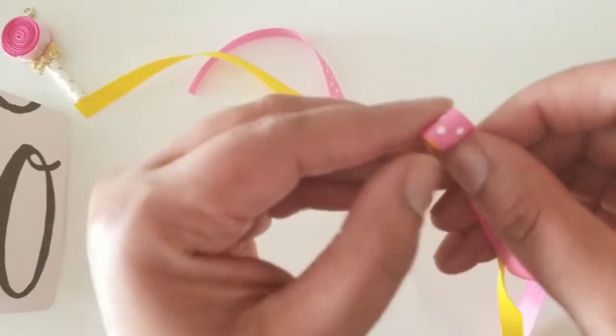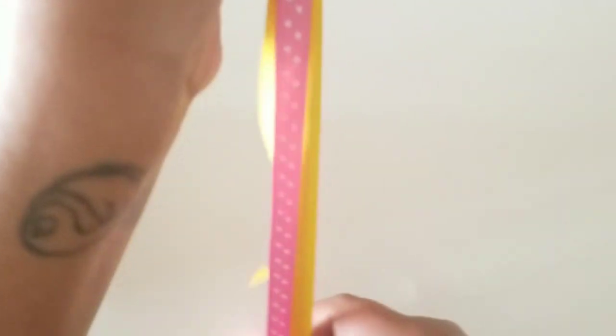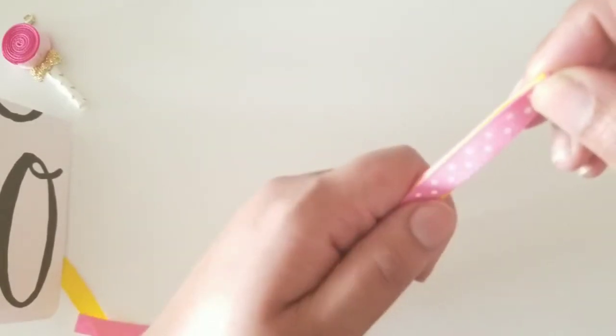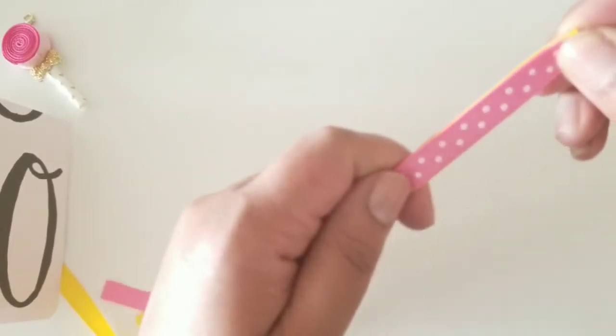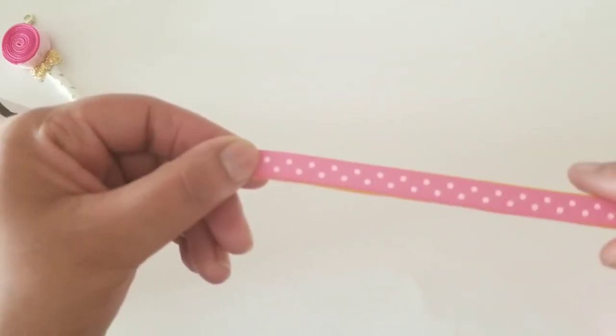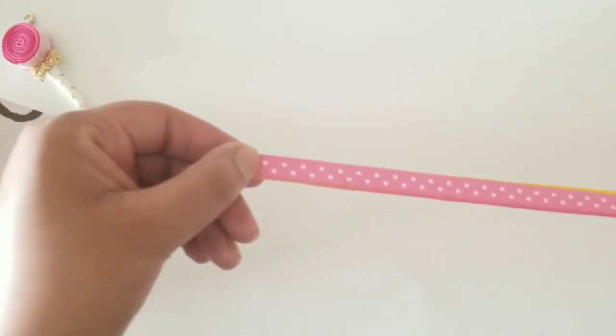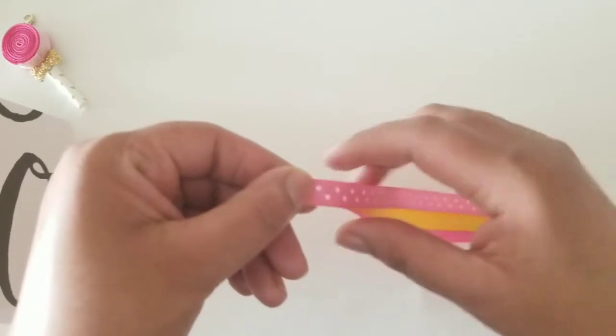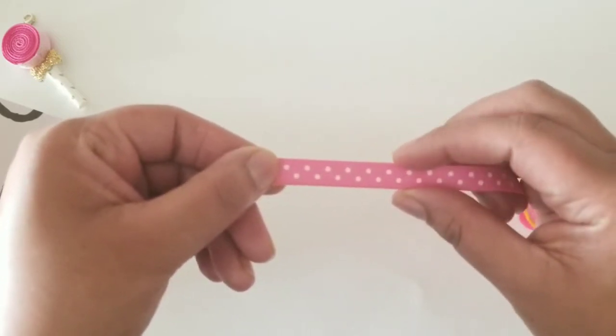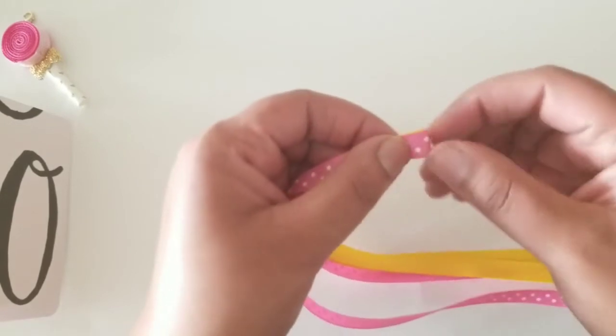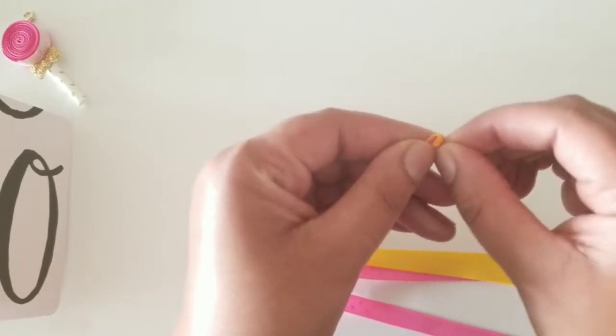And then again, we're going to double it over. So they're both stacked on top of each other. And you want to kind of make sure that you hold it taut because you want to maintain these ribbons, the two ribbons or the four tails actually kind of flowing and laying on top of each other.